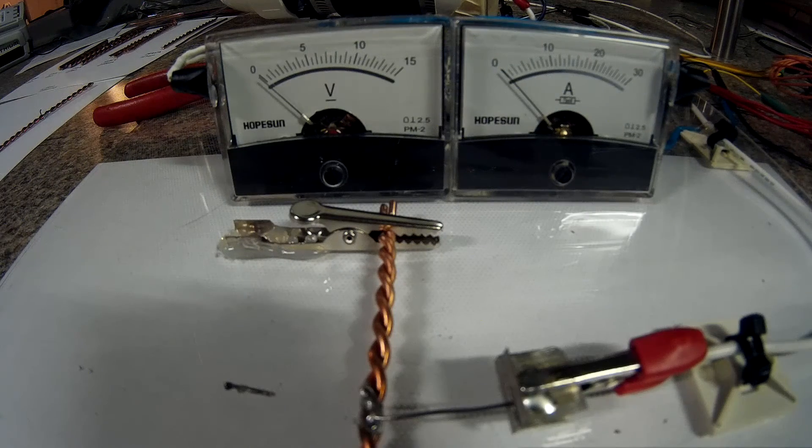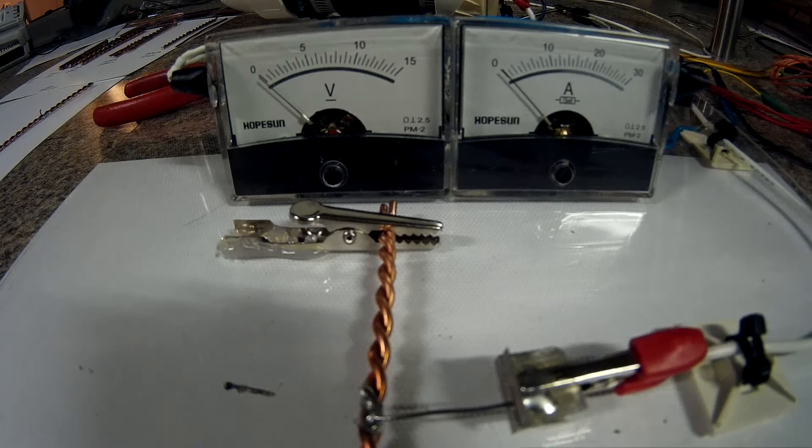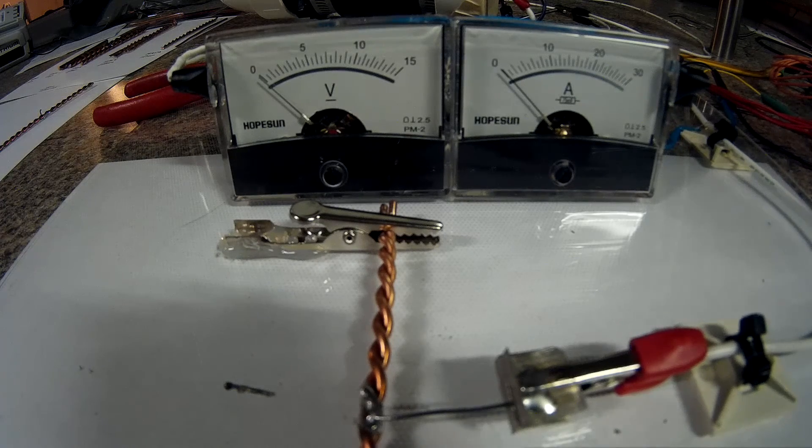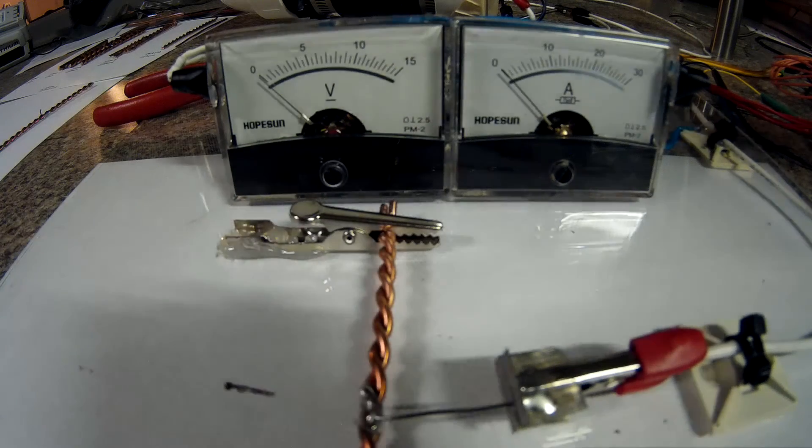Okay, last test. This is the 12 gauge twisted pair and the gap is set at 19.98 millimeters. Contact. Okay, that popped at 11 amps.